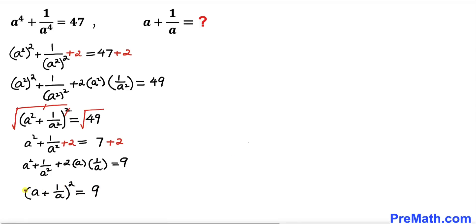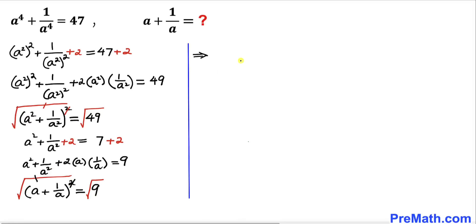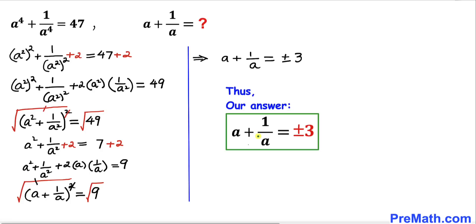So the left hand side becomes a plus 1 divided by a, whole squared, equals 9 on the right hand side. Let's go ahead and undo this square by taking the square root on both sides — the square and square root undo each other. Therefore, a plus 1 divided by a equals positive or negative 3. Thus our value for a plus 1 divided by a turns out to be positive or negative 3, and that's our final answer.